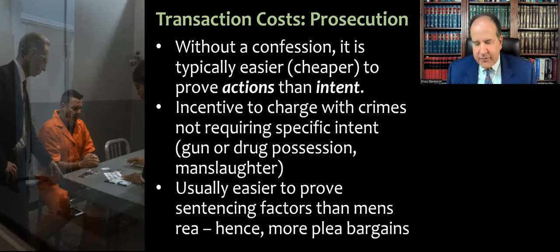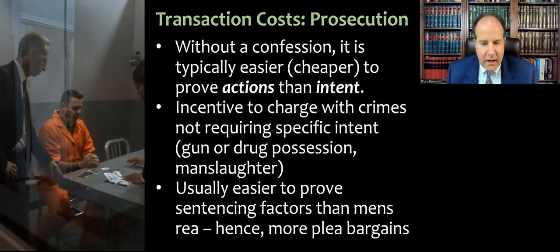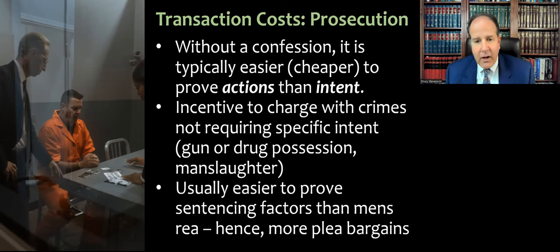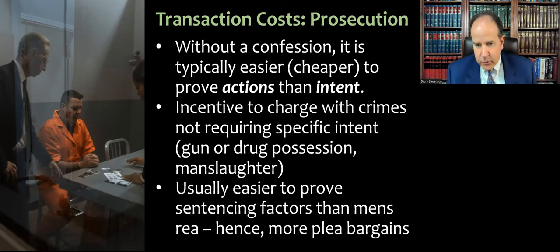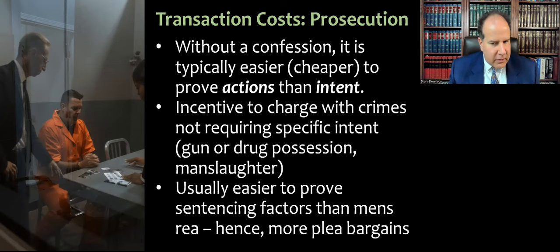The same is true when we get to sentencing. If the prosecutor can get a plea bargain — which happens in about 95% of cases — the person admits guilt, and the real work becomes the sentencing hearing. Sentencing factors are easier to prove because they don't involve showing what was going on inside the person's head. For example, if we're going to give a stiffer sentence for a repeat offender, we just have to show how many crimes they've already been convicted of. Or if the crime involves a greater punishment based on more than a certain weight of drugs or amount of money stolen, that's easier to prove. So sentencing factors typically have lower transaction costs for prosecutors than proving the mens rea of the underlying crime. The incentive is to get an admission of guilt on some charge and then focus efforts on the sentencing factors.